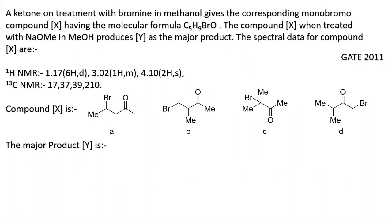Now the next question, asked in GATE 2011: a ketone on treatment with bromine in methanol gives the corresponding monobromo compound X with molecular formula C5H9BrO. Compound X when treated with NaOMe — a base in MeOH, acting as a nucleophile — produces Y as the major product. The spectral data given for compound X include ¹H NMR and ¹³C NMR. We have to find compound X first.